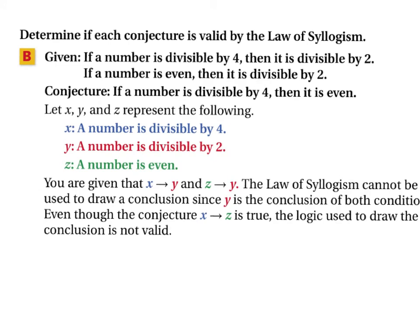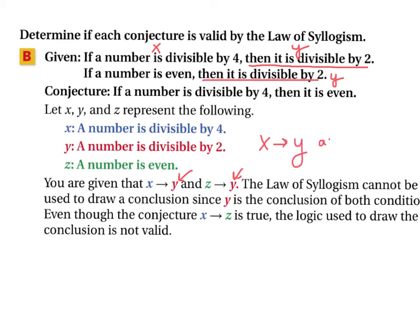Part B — Given: if a number is divisible by four, then it is divisible by two. If a number is even, then it is divisible by two. Conjecture: if a number is divisible by four, then it is even. Notice that the conclusion of the first statement is repeated as the conclusion of the second — not the hypothesis. The conclusion of the first would need to match the hypothesis of the second. Since the terms are in the wrong position, this conjecture is not valid.